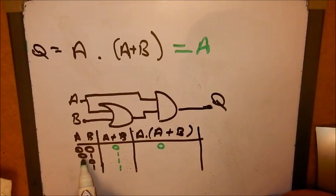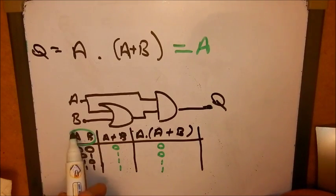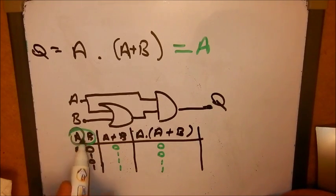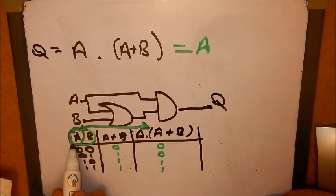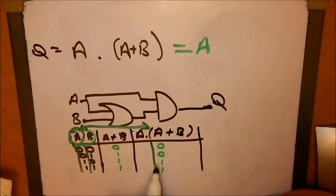Now if we AND the A or B with A, we have zero, zero, one, one. And once again we can prove that this is equal to this as these columns are the same.